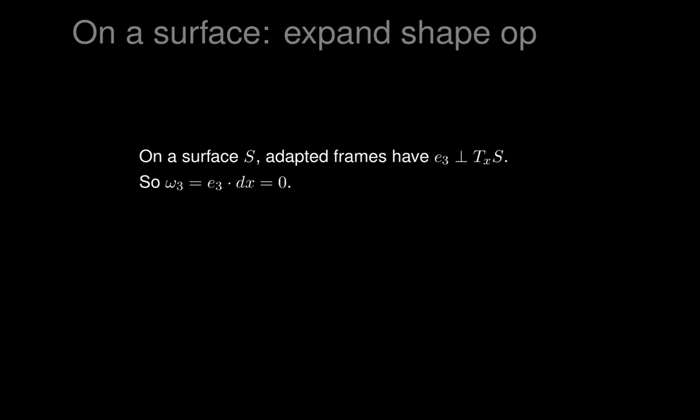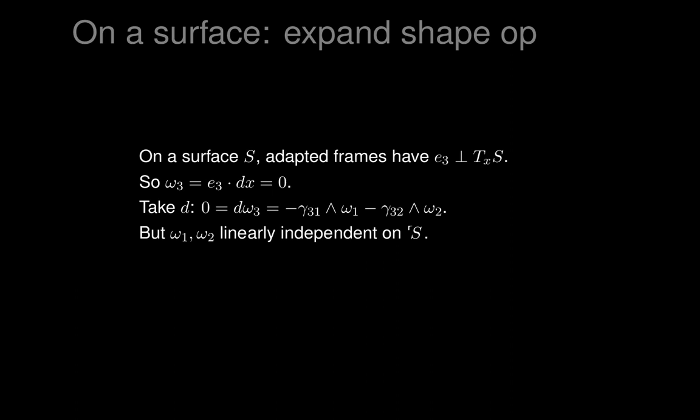On any surface, the adapted frames have E3 perpendicular to the tangent plane. Your head is perpendicular to your feet as you stand on the surface. So omega_3 measures the tendency of the vector dx to move in the direction of E3, and that's always zero - you can never move perpendicular to the surface when you're moving tangent to it. We take the exterior derivative of that and get an equation we know must be true, because if omega_3 is everywhere zero, then its exterior derivative is everywhere zero.